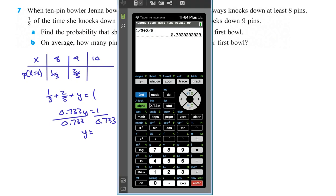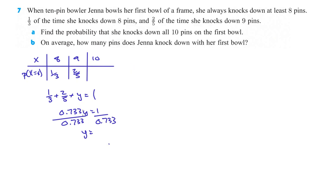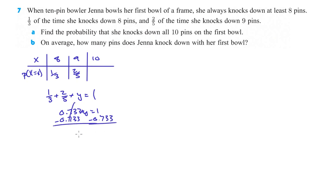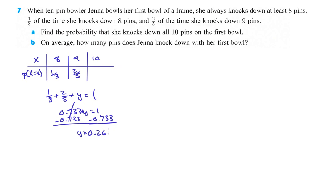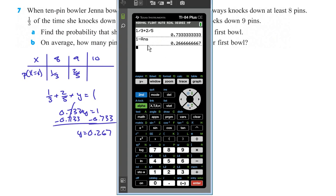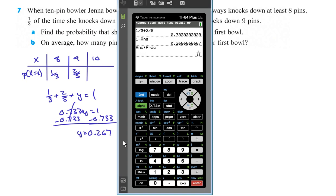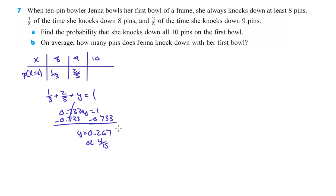So 0.733 plus Y equals 1, so we subtract 0.733 from both sides. We get Y equals 1 minus 0.733, which gives us 0.267. If you want to turn this back into a fraction, push math, enter, enter on the calculator and it'll give us 4/15 — whichever one you want.